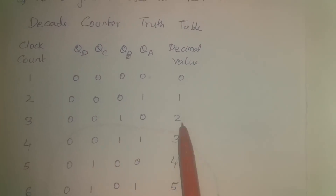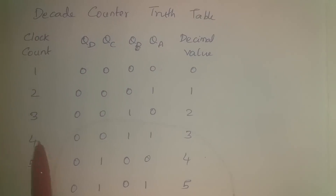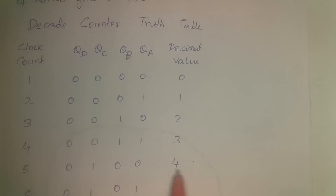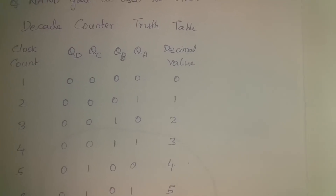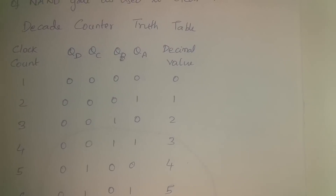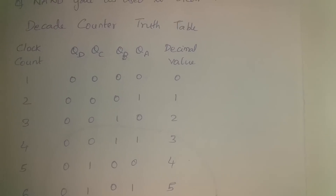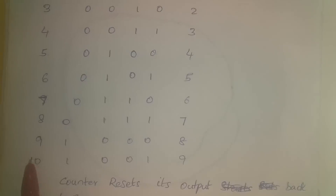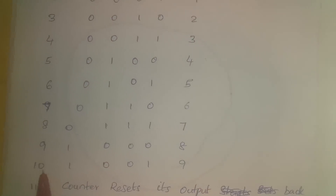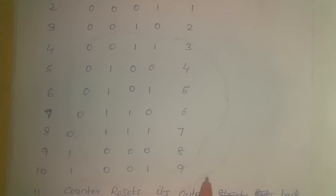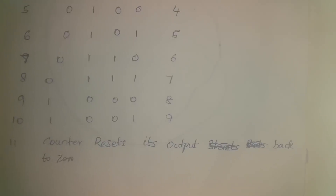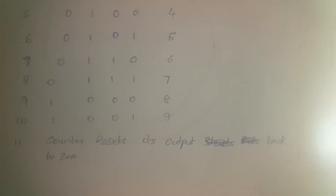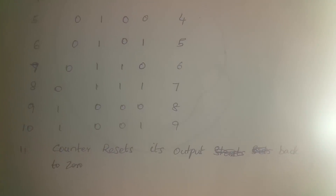Continuing the truth table: fifth clock → 0100 (decimal 4); sixth → 0101 (decimal 5); seventh → 0110 (decimal 6); eighth → 0111 (decimal 7); ninth → 1000 (decimal 8); tenth → 1001 (decimal 9). At the eleventh clock pulse the counter resets back to zero. That is all about the decade counter. More in the next session — thank you.